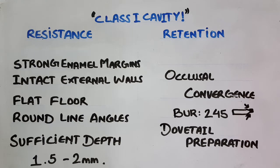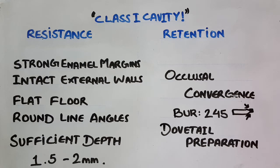The resistance form comprises strong enamel margins and intact external walls. There is no filling material comparable to the strength of natural tooth substance, so we have to minimize the extension of our preparation and keep the enamel margins and external walls as strong as possible.